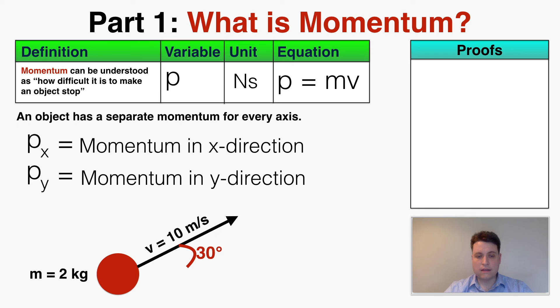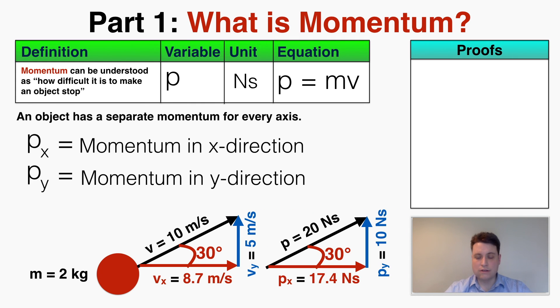Using trig I can find that its x velocity is 8.7 meters per second and its y velocity is 5 meters per second. If I multiply all of those by the mass I can get the momentum in each direction as well. So it has an x-direction momentum, a y-direction momentum, and a total momentum using the same rules for vectors.